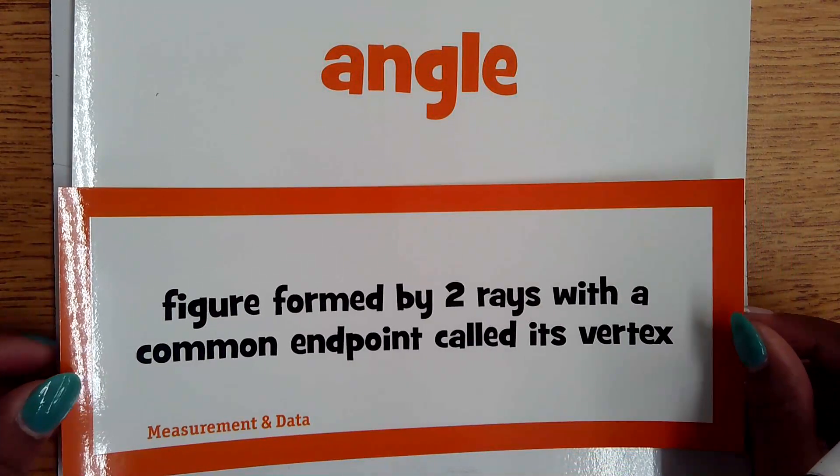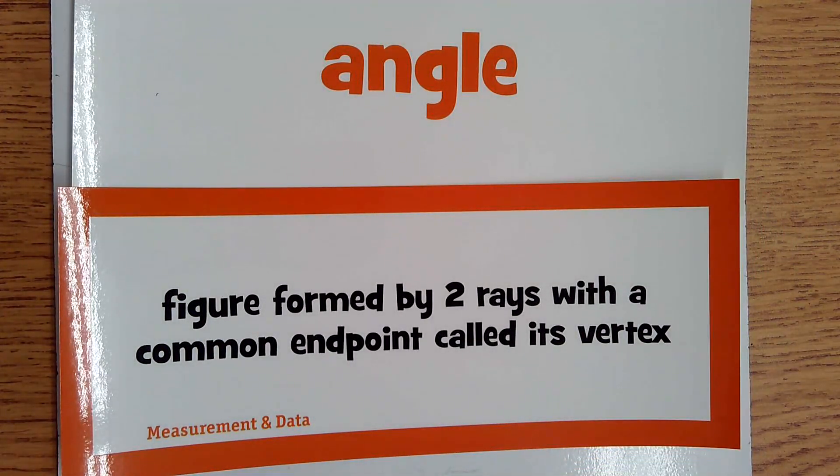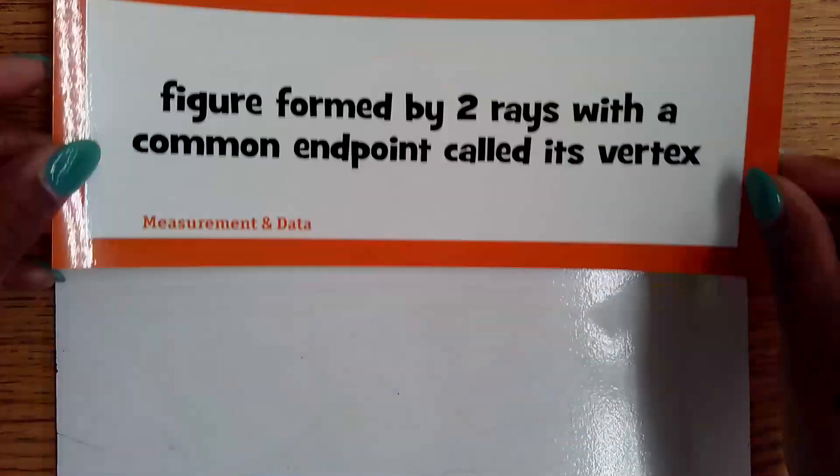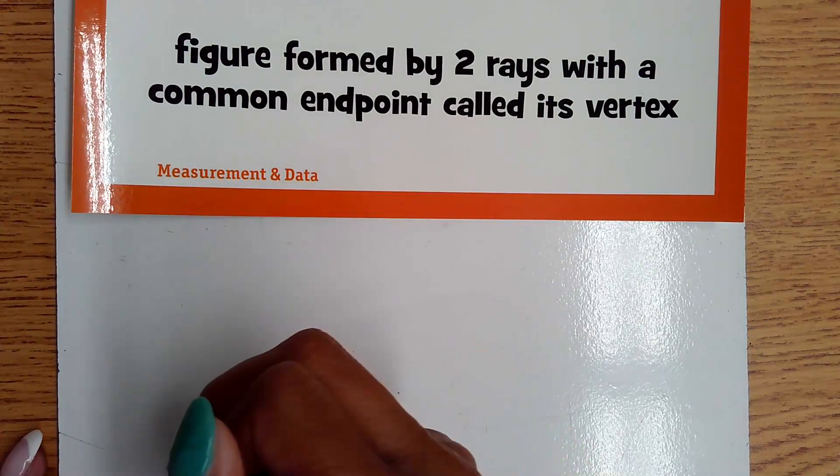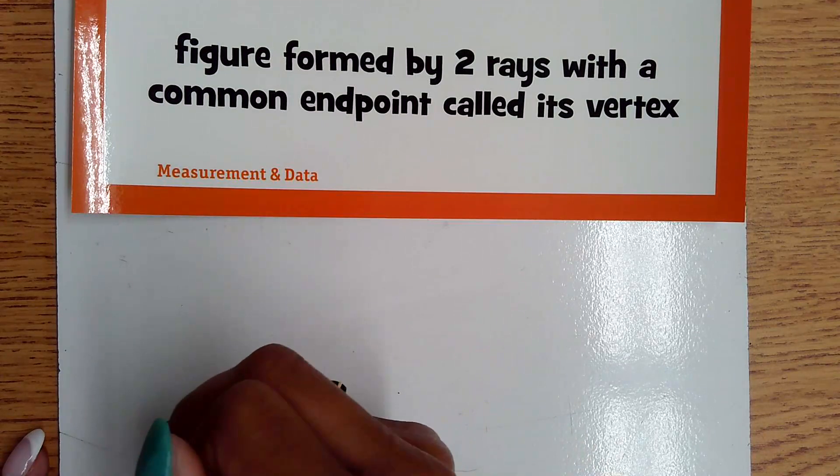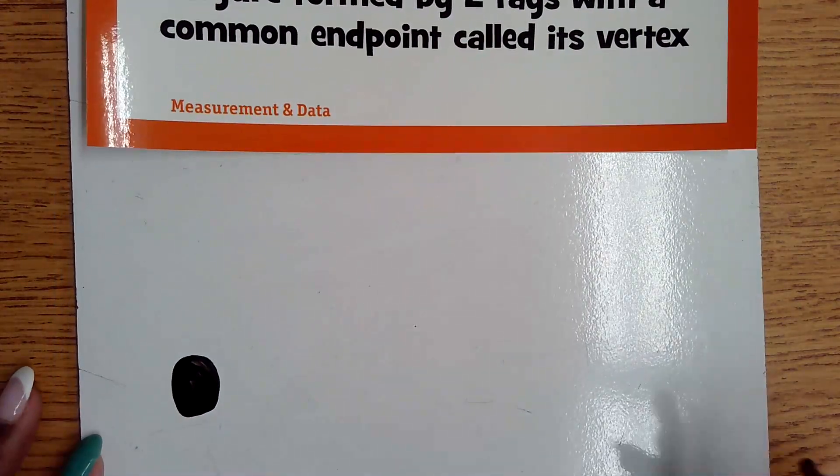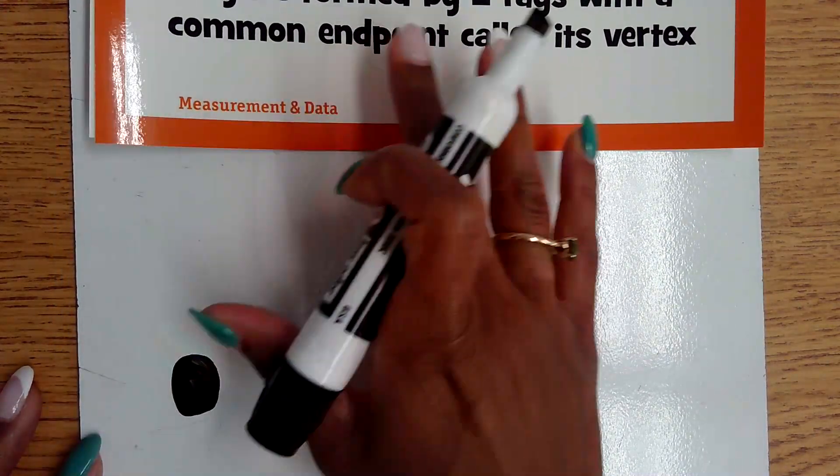Our next vocabulary word is angle. An angle is a figure formed by two rays with a common endpoint called its vertex. So again, we know a ray starts at one end with our point, and we're going to call that the vertex.